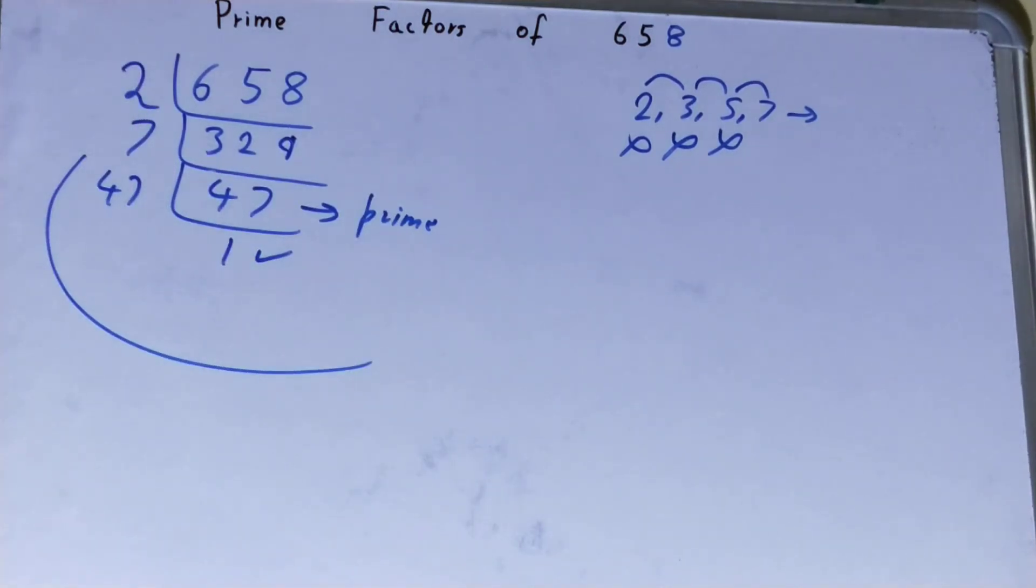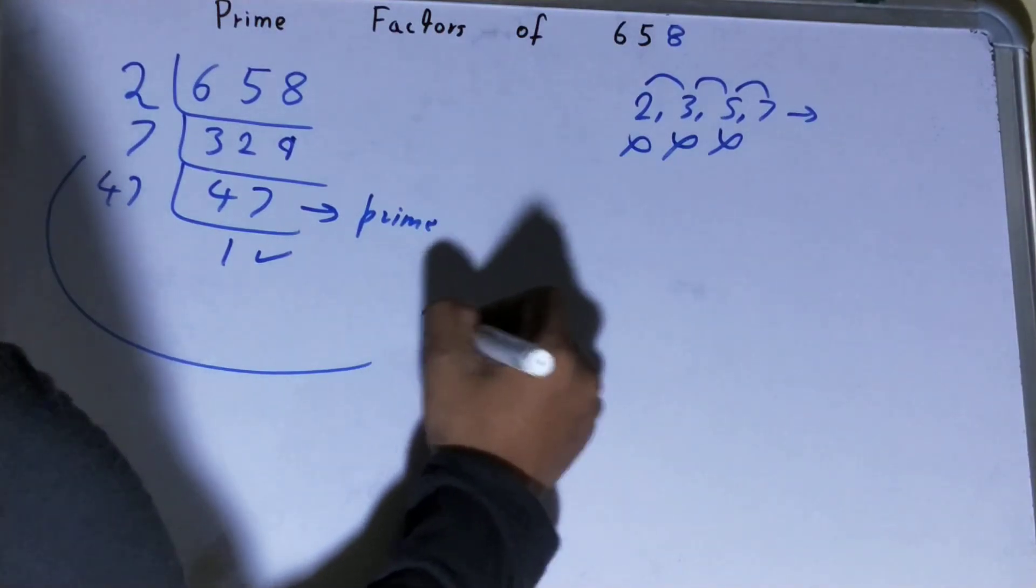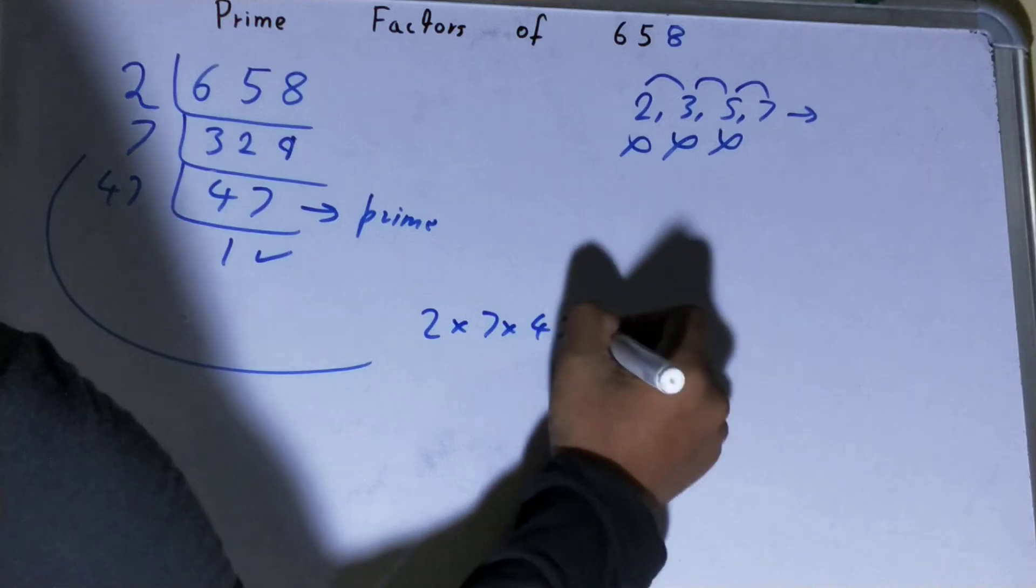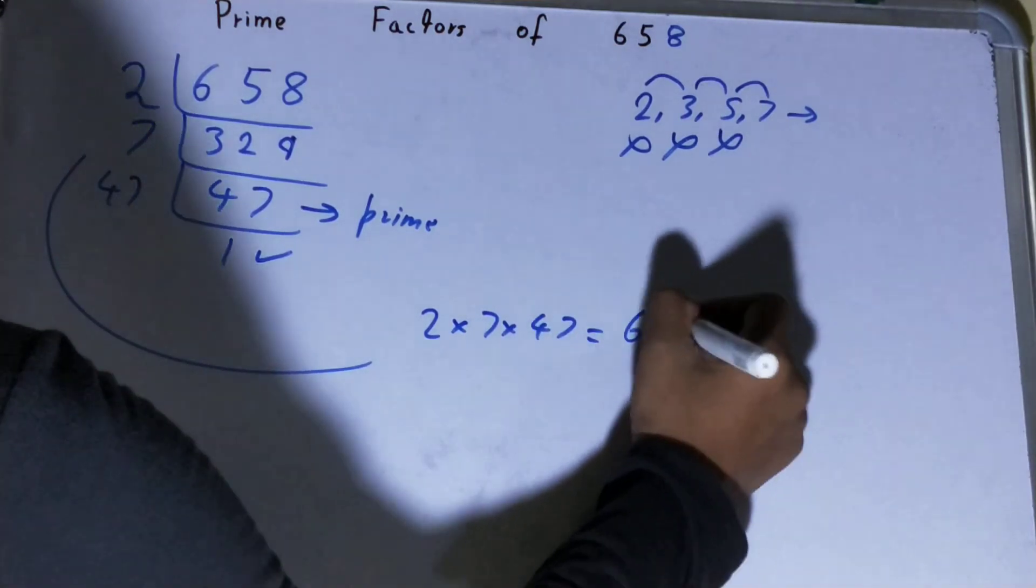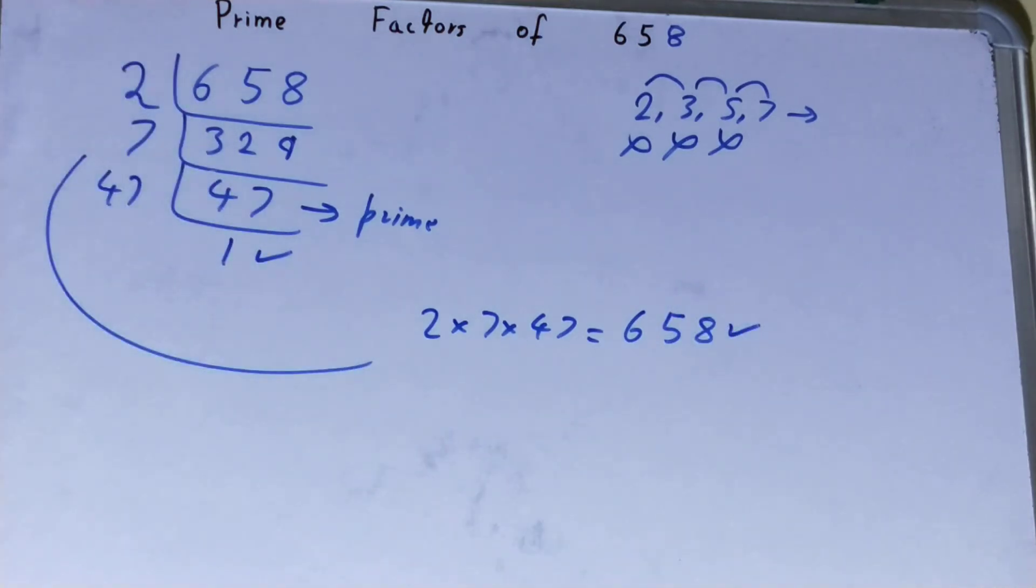Whatever you have on the left-hand side will be the prime factors of the number 658, that is 2 × 7 × 47. Now if you want to check whether it is right or not, you can multiply it, and if on multiplying you have the number back again, that means your calculation is correct. If not, you need to recheck.